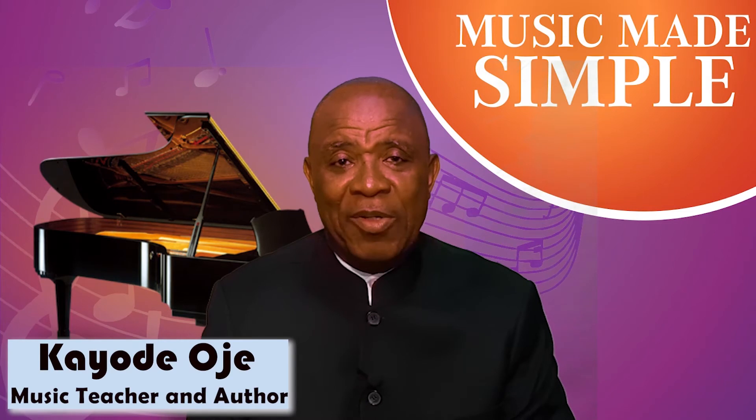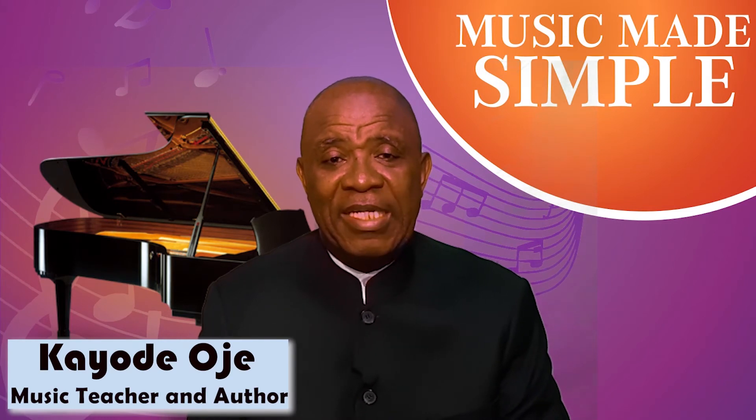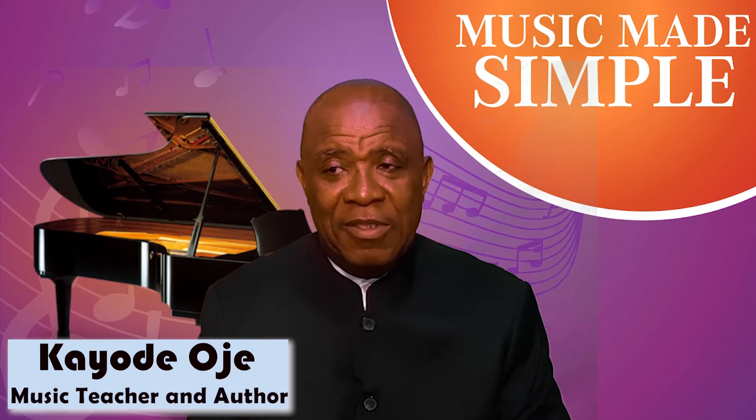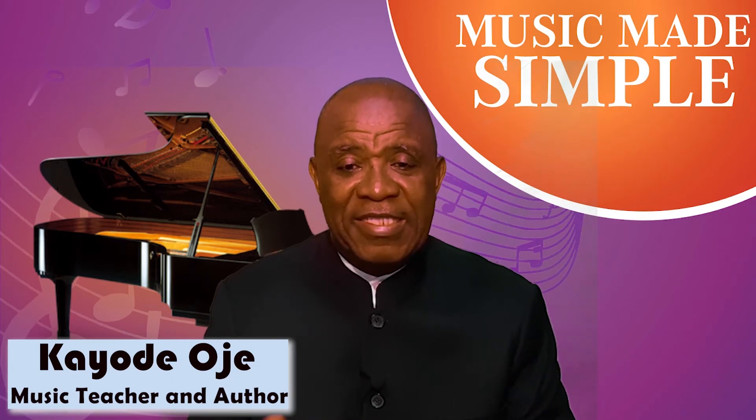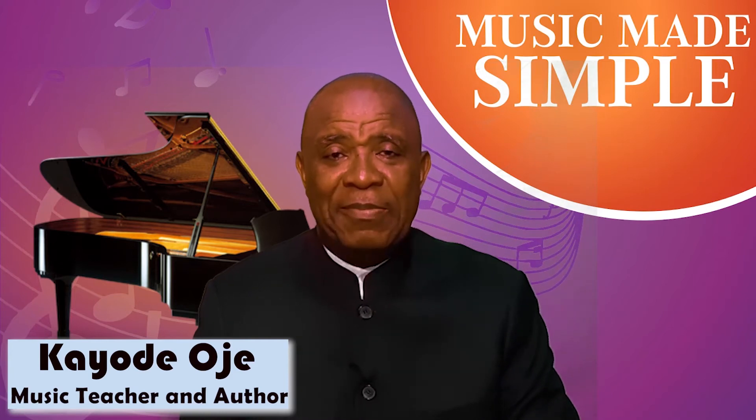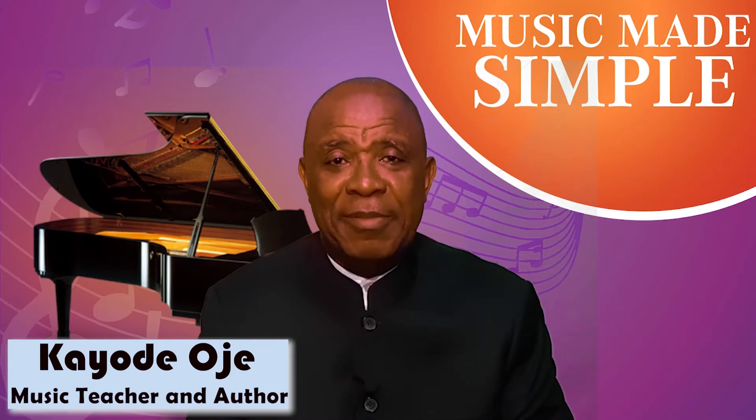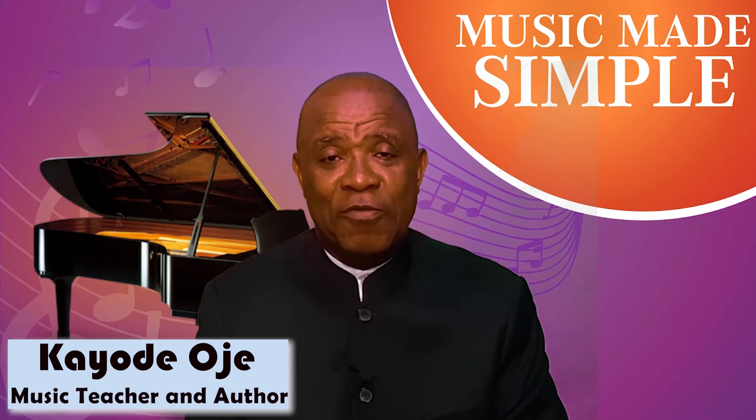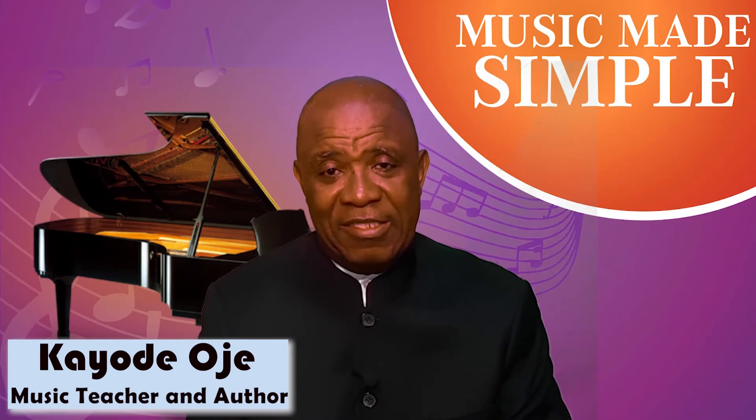In Lesson 21, we learnt about the keyboard, especially the white keys and how they are represented on the staff because they have the same names as the lines and spaces of the staff. What about the black keys? How do we give them names? We give the black keys names by the use of accidentals.